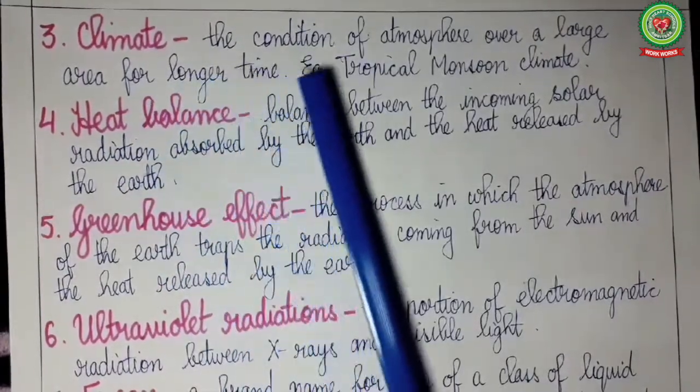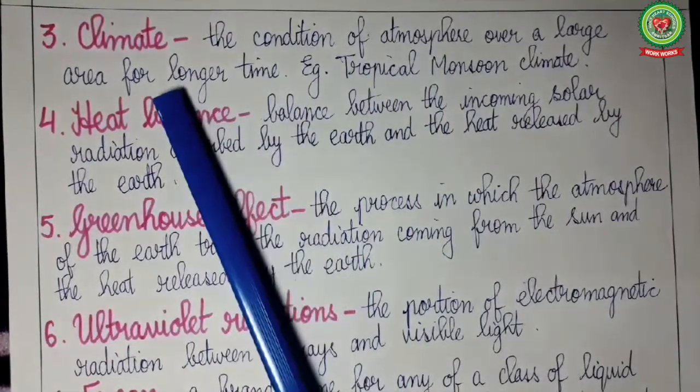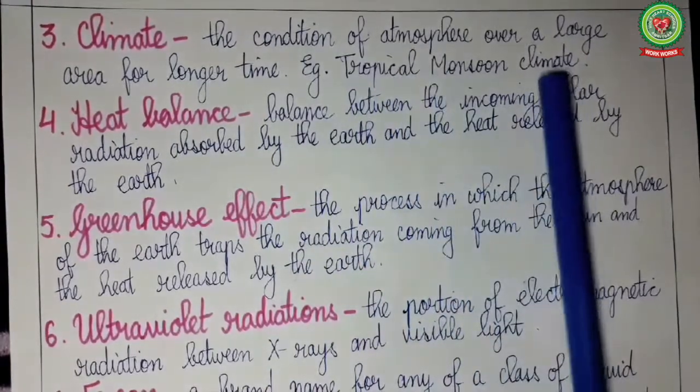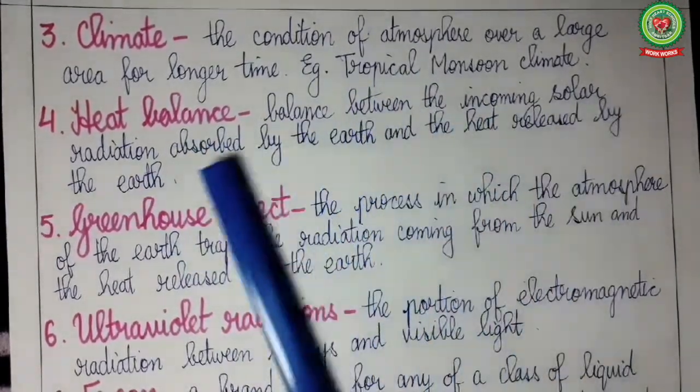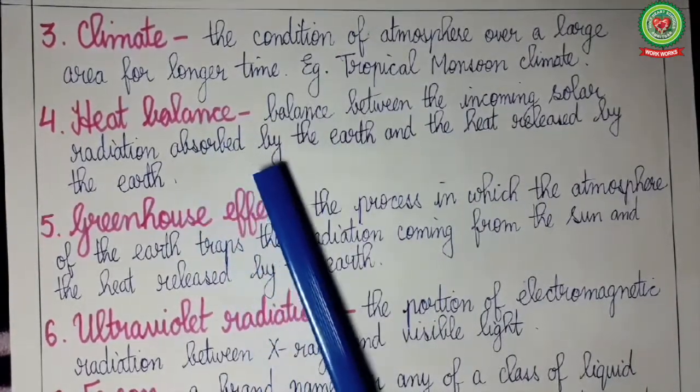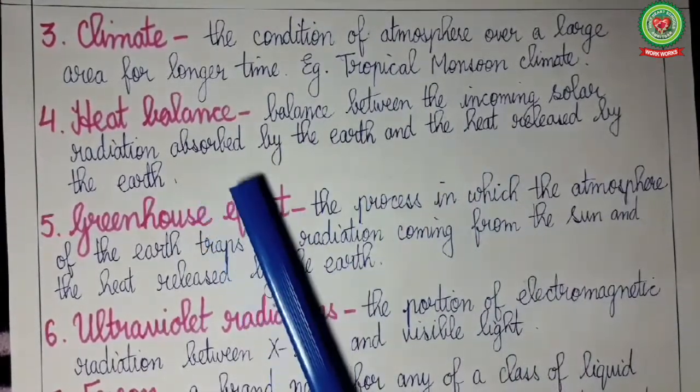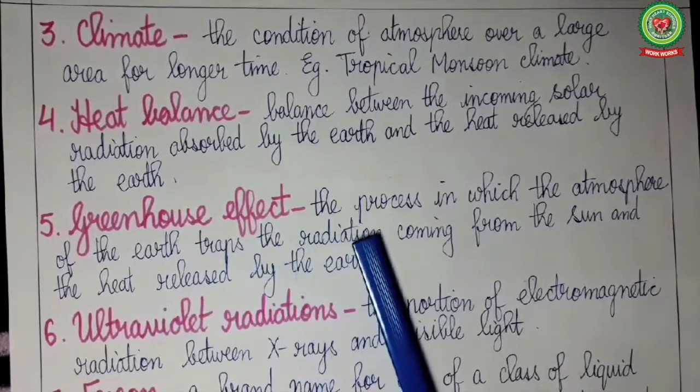Climate: the condition of atmosphere over a large area for longer time is called climate. For example, India has tropical monsoon climate. Heat balance: balance between the incoming solar radiation means the heat and light which is coming from the sun and the heat released by the earth is called heat balance.